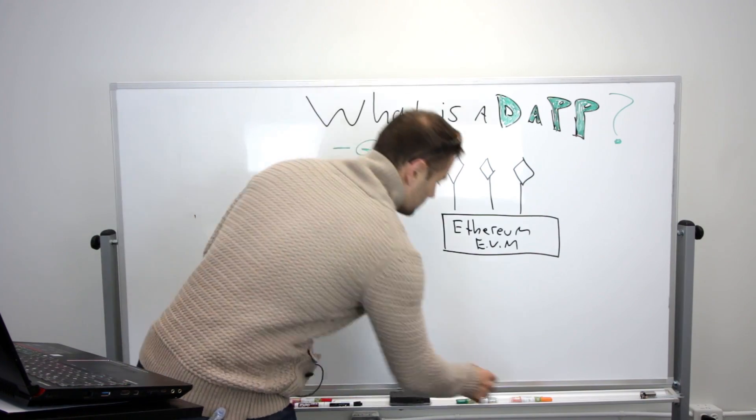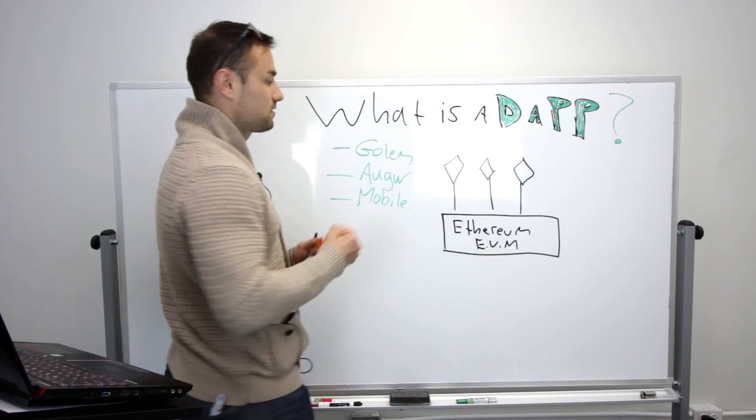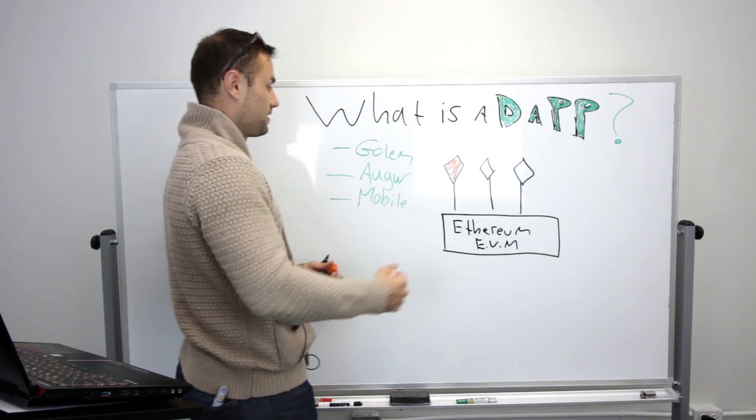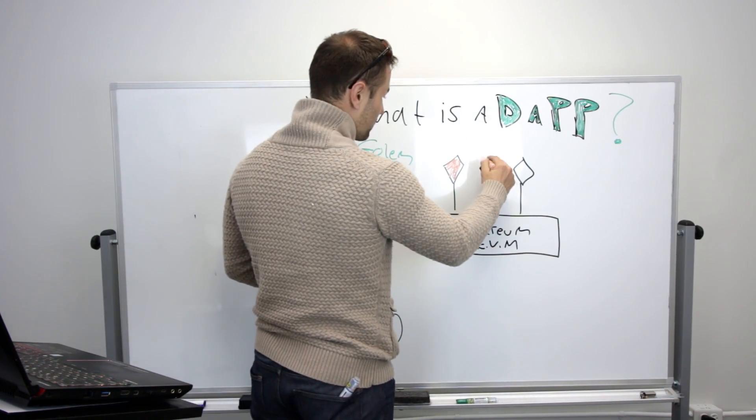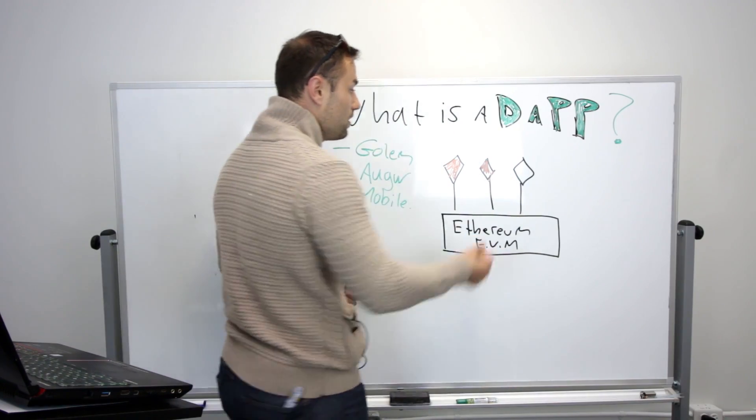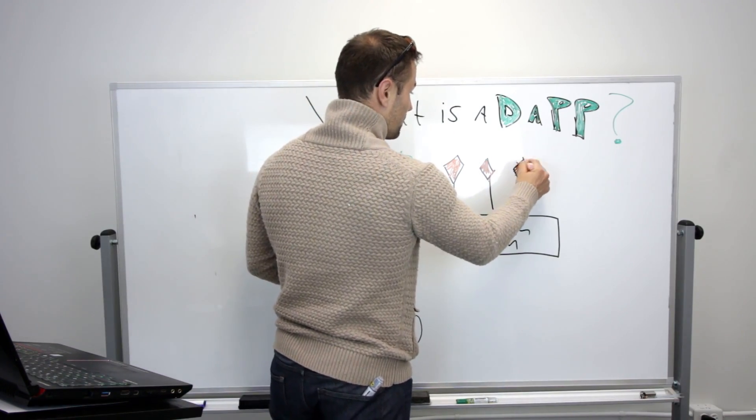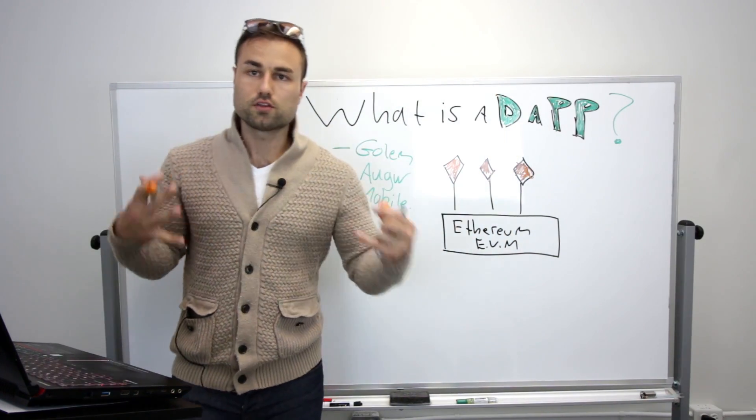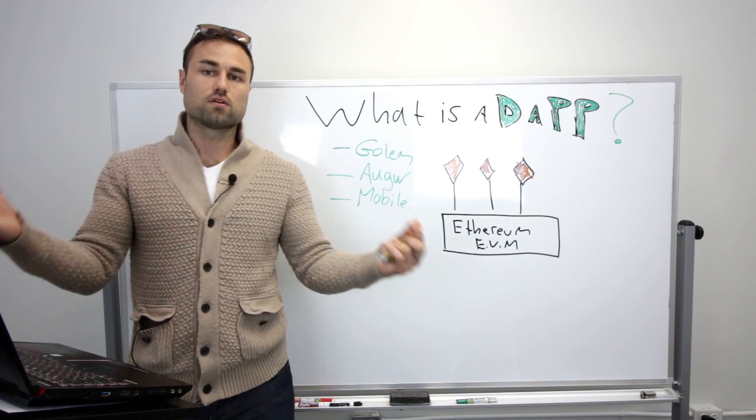Pretend these are all startups. For example, Golem built on top of Ethereum and they raised a bunch of money. Augur, they built on top of Ethereum and they raised a bunch of money. MobileGo just recently, I think they raised a ridiculous amount. They did on top of Ethereum. So you have all these different startups coming around using the Ethereum protocol to create your own startups.